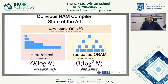The state of the art: we have a lower bound of Ω(log N). There are two main techniques — tree-based ORAM achieved log² N overhead, and the hierarchical construction achieved log N. Today I'll talk about the lower bound and tree-based ORAM, and tomorrow I'll cover the log N result. Before I start, any questions?